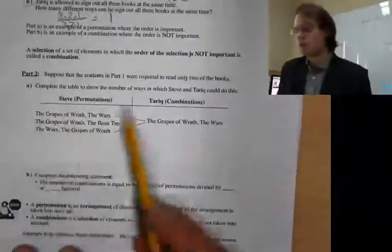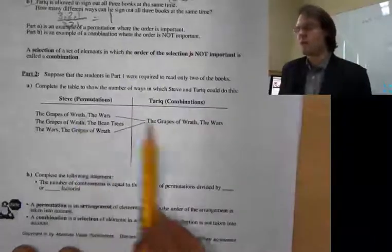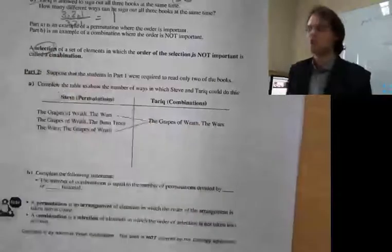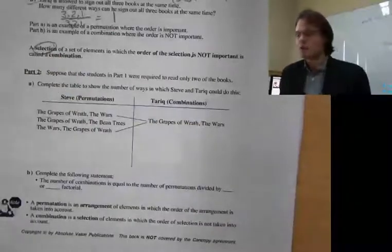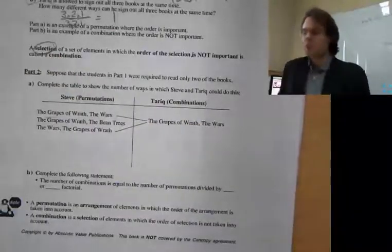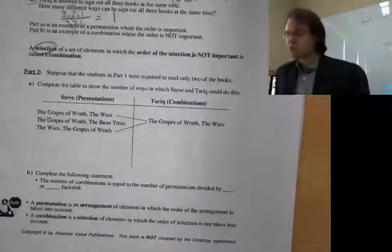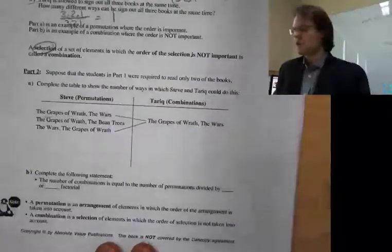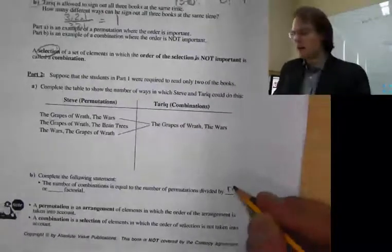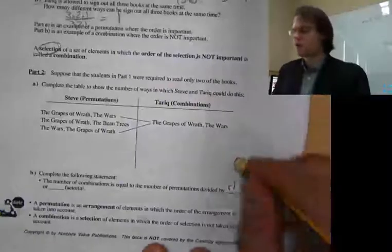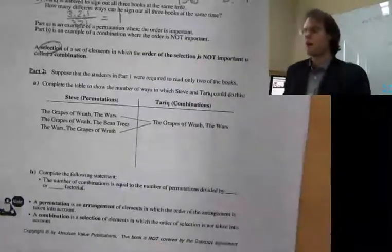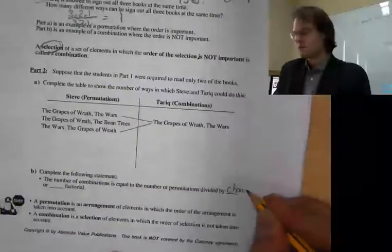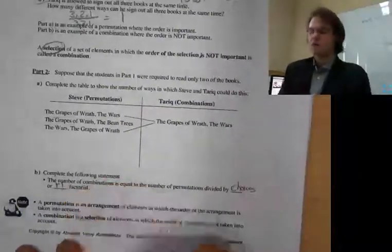This here shows several combinations. Key word to notice: 'selection' is for combination. Complete the following statement: the number of combinations is equal to the number of permutations divided by r factorial — divided by your choices, or r factorial.